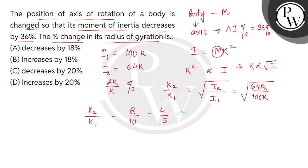So we subtract 1 from both sides. k2 by k1 minus 1 equals 4 by 5 minus 1. On the left side, k2 minus k1 divided by k1 equals 4 minus 5 divided by 5.